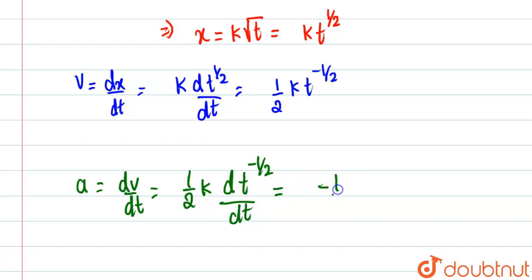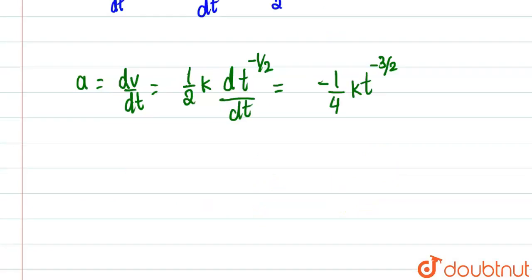So this will come out to be minus 1 by 4 k t to the power minus 3 by 2. So basically, this is our answer. We have acceleration equal to minus 1 fourth of k into t to the power minus 3 by 2.